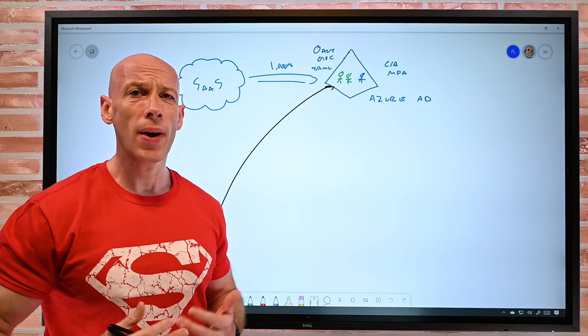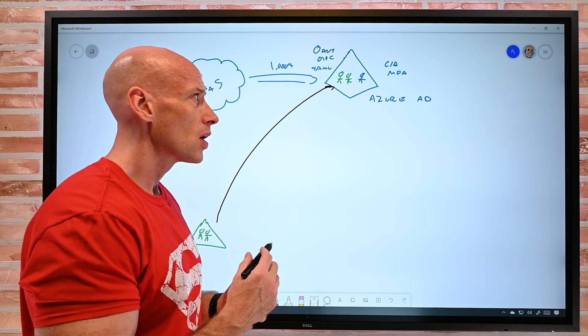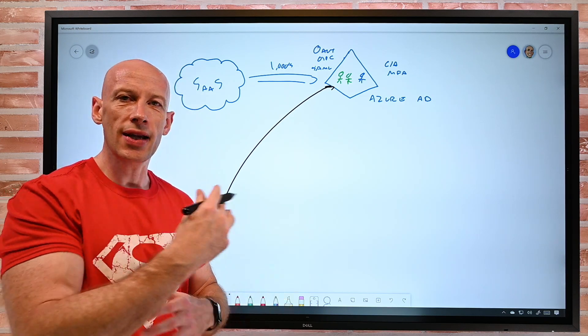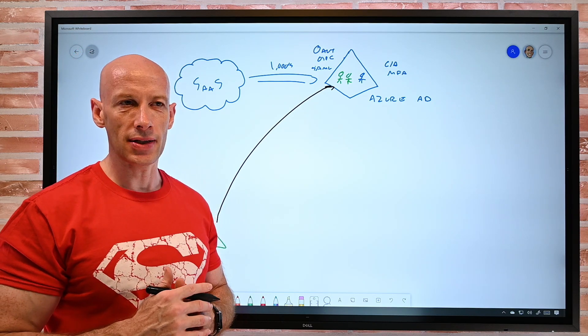But that conditional access is so powerful to let me put constraints and controls around using them. I've got Azure MFA. There's identity risk through Azure AD identity protection. Just a huge set of capabilities.